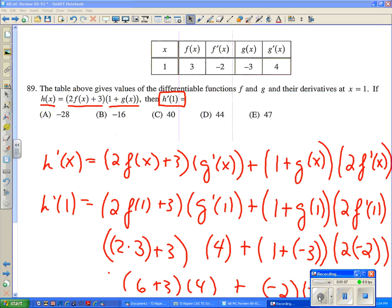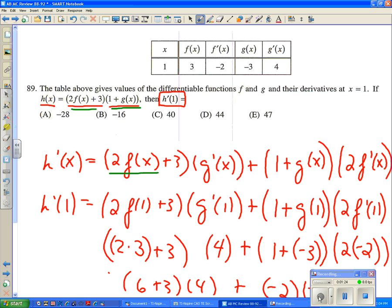So on number 89, I've taken and I've written out the derivative of h of x, and it's a product. You need to be very careful to use the product rule when you've got a product. So it's the first times the derivative of the second plus the second times the derivative of the first. And now we're going to evaluate h prime at 1. So we're going to put 1 in every time we see an x, and then we're going to go to the list, and we're going to say,